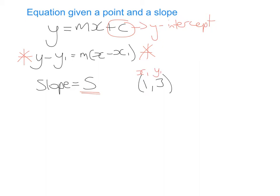So all you need to do to answer this question is substitute in m for the slope and your x1 and your y1. So let's have a go at that. So it's going to be y minus 3 equals m which is 5 bracket x minus 1.